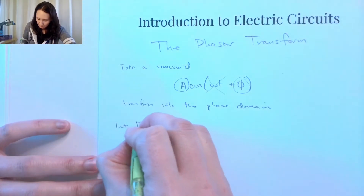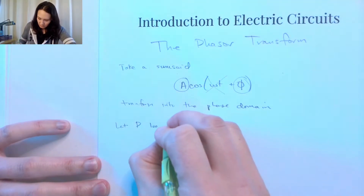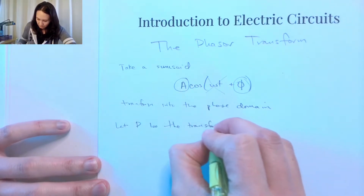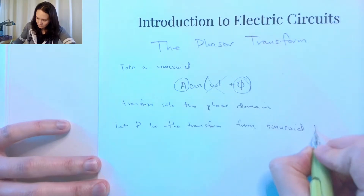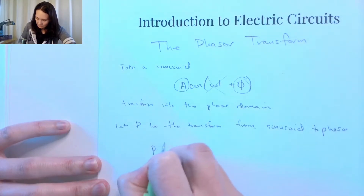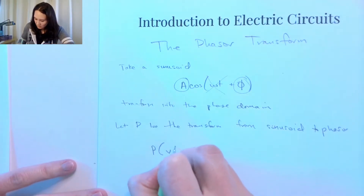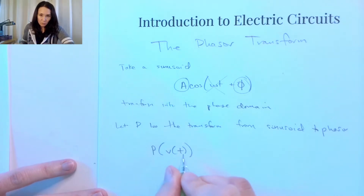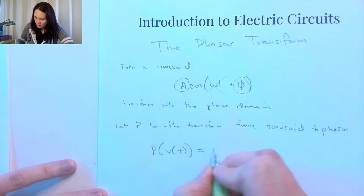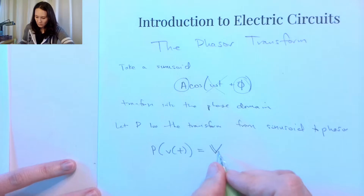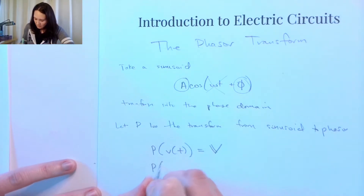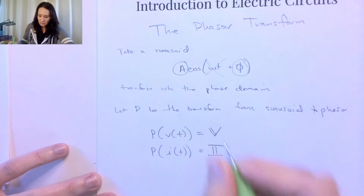Let P be the transform from sinusoid to phasor. P is going to be a function that operates on a sinusoidal voltage function where the independent variable is time. Once we turn this into a phasor, we have a new notation — almost like a vector. I'll put a capital V with a script to indicate phasor form. Similarly, the phasor transform of the sinusoidal current function gives the phasor form of I.